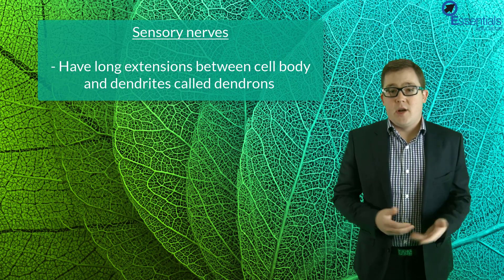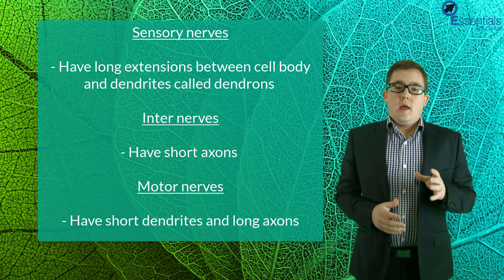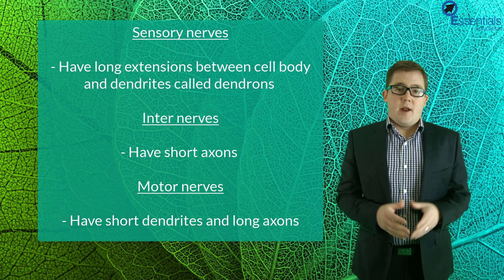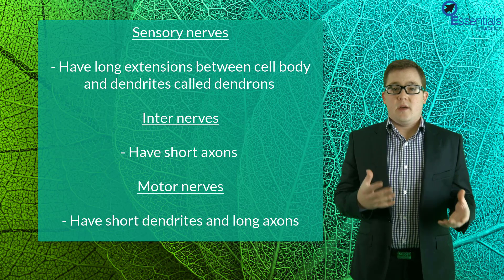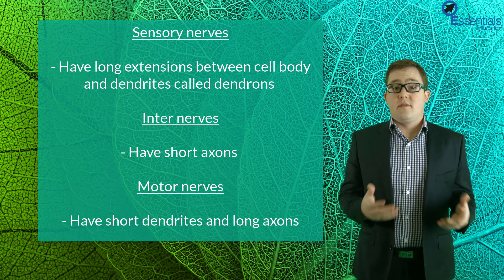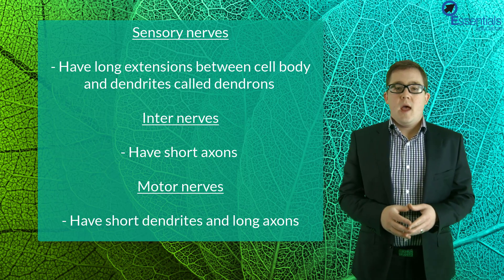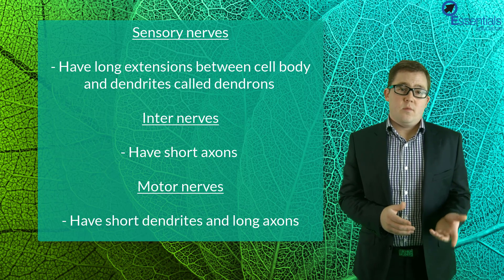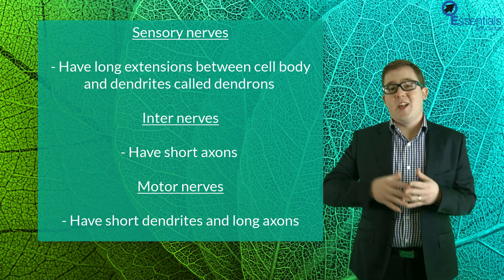Okay, now let's get back to our nerve types. Interneurons are our second type and only have short axons because they just connect sensory nerves to motor nerves in the central nervous system. And finally we have motor nerves themselves which usually have short dendrites but very long axons.